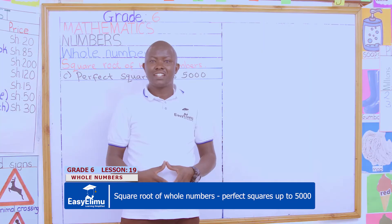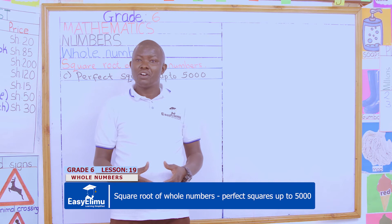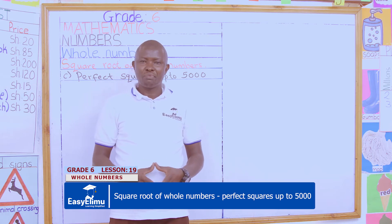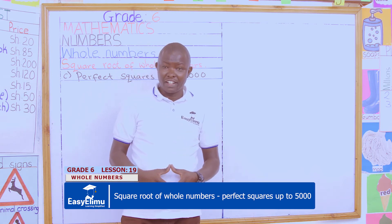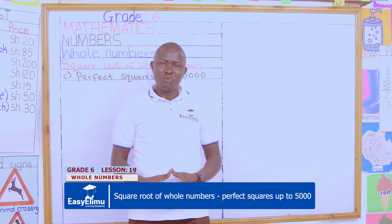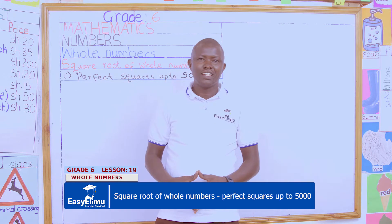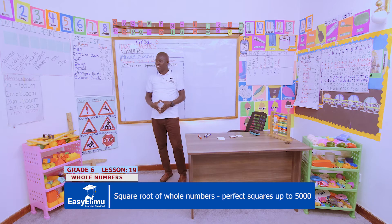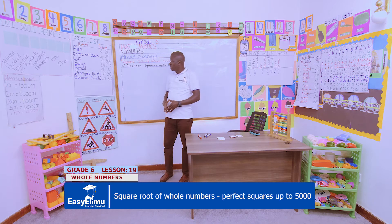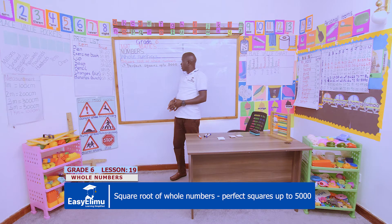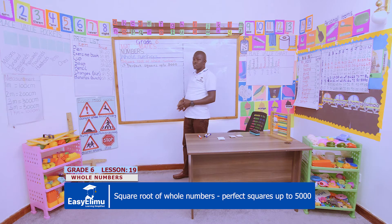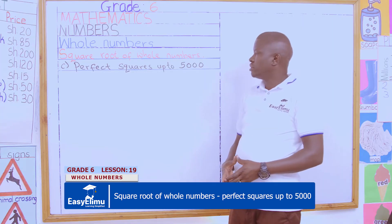How do you compute the square root of a number? Join me, Teacher Jonathan, at Easy Elimu Learning Simplified as we look at the square root of numbers — specifically, the square root of perfect squares up to 5,000.